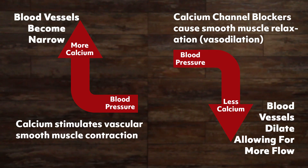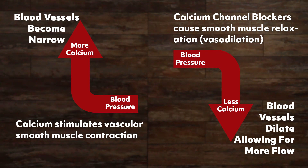Because calcium stimulates vascular smooth muscle contraction, when there is more calcium in the cells, the vessels become narrower and blood pressure increases. When there is less calcium in the cells, the blood vessels are more relaxed and wider, so blood pressure decreases.